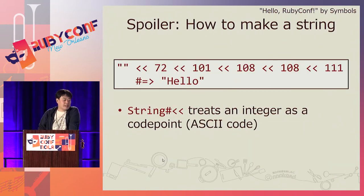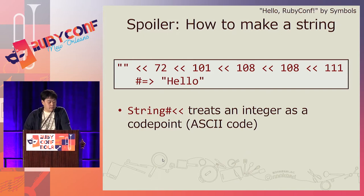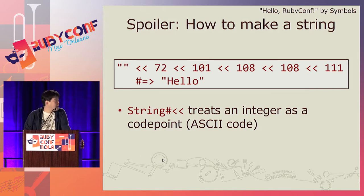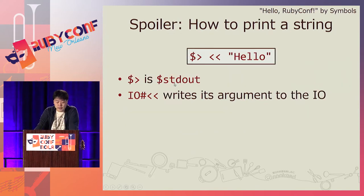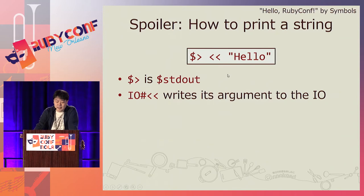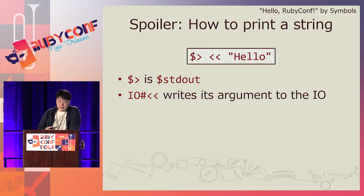The next key is how to make a string. We can achieve this by using numbers and string append. The string append method treats an integer as a code point, or ASCII code. So by using this, you can get any string you want. For example, 72 is the code point for capital H, 101 is for lowercase e, and so on.